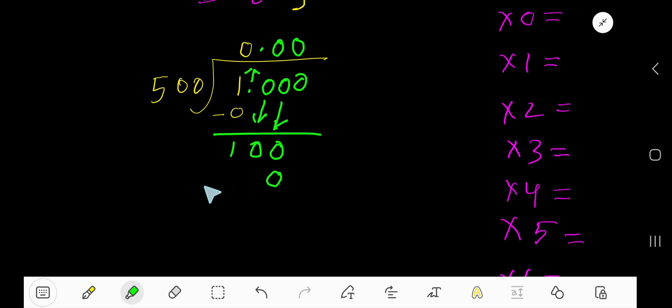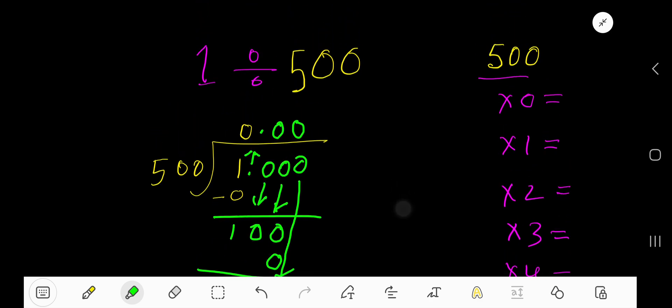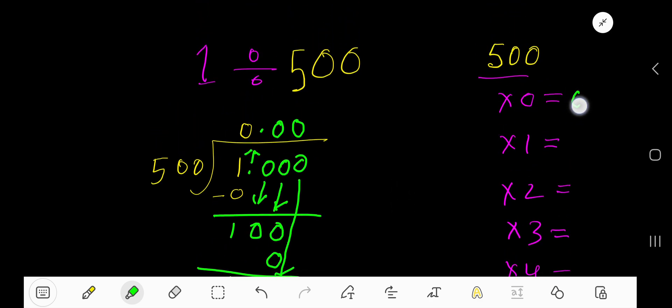If you subtract, you get 100. Bring down this 0. 500 goes into 1000 how many times? We need a multiplication table. 500 times 0 is 0. 500 times 1 is 500.